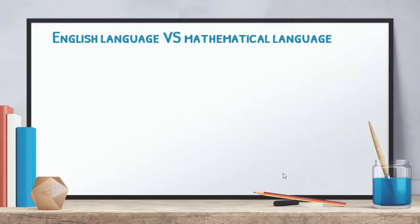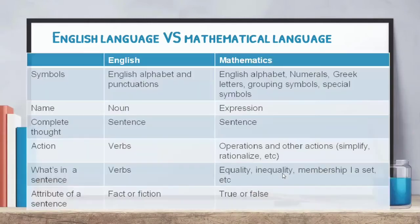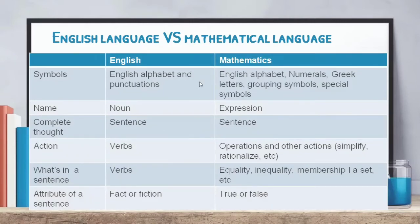For symbols, in English we use the alphabet and punctuation — period, comma, question mark. But in mathematics we have many more: the English alphabet for variables, numerals, Greek letters to name angles such as theta and beta, grouping symbols like parentheses, brackets, and braces, and special symbols like the integral sign, the radical sign, and the factorial symbol.